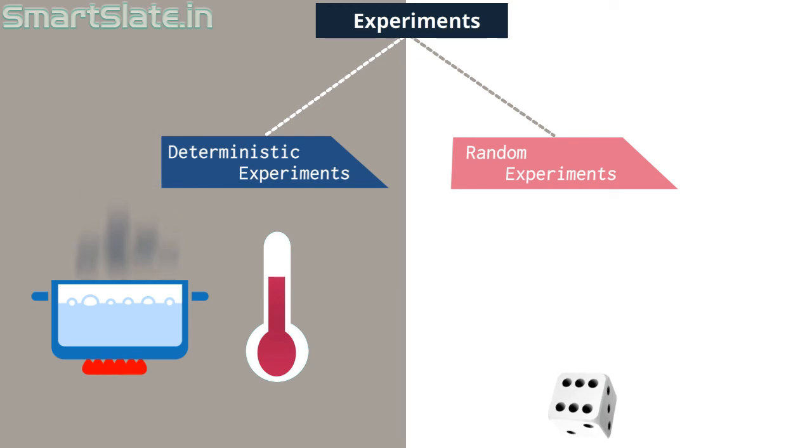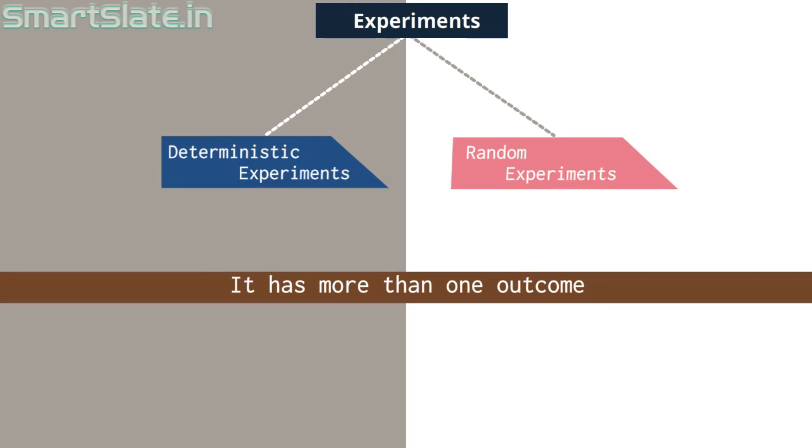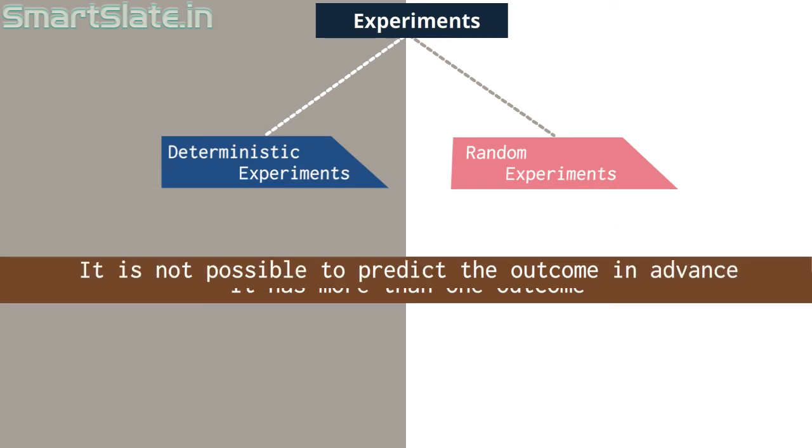The random experiment is the one in which it has more than one outcome and it is not possible to predict the outcome in advance.